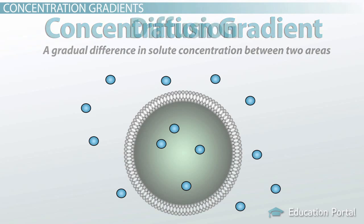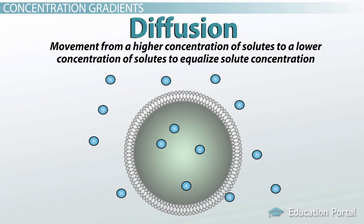Solutes here would move by diffusion, or movement from a higher concentration of solutes to a lower concentration of solutes, in order to equalize solute concentration. This evens out the concentration on both sides.